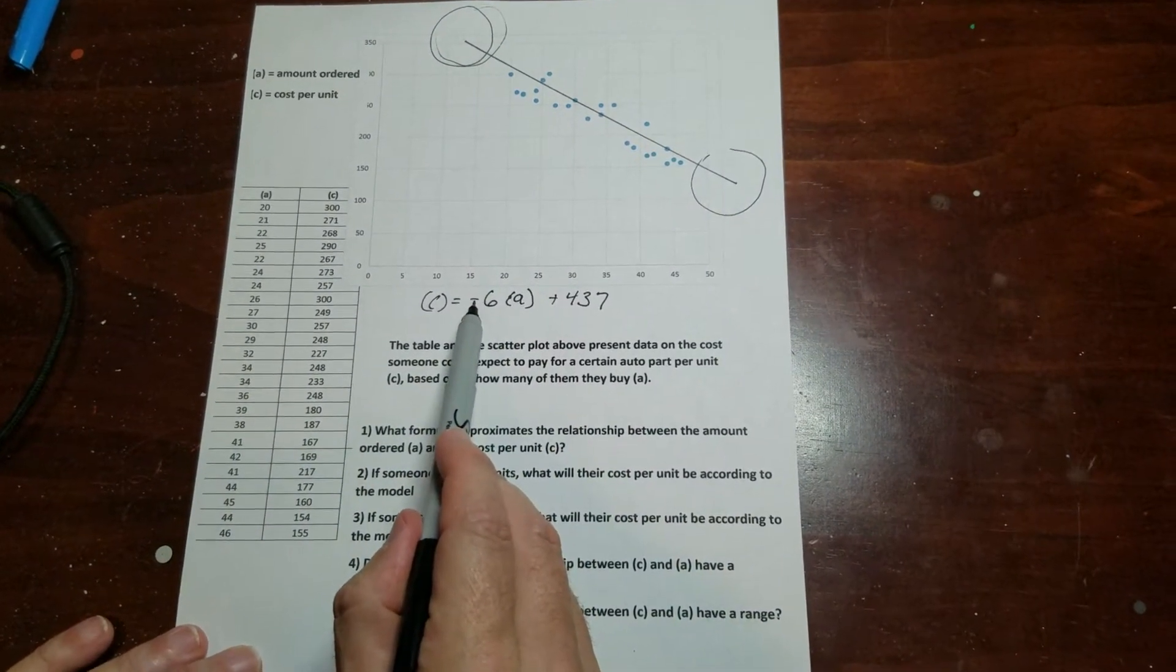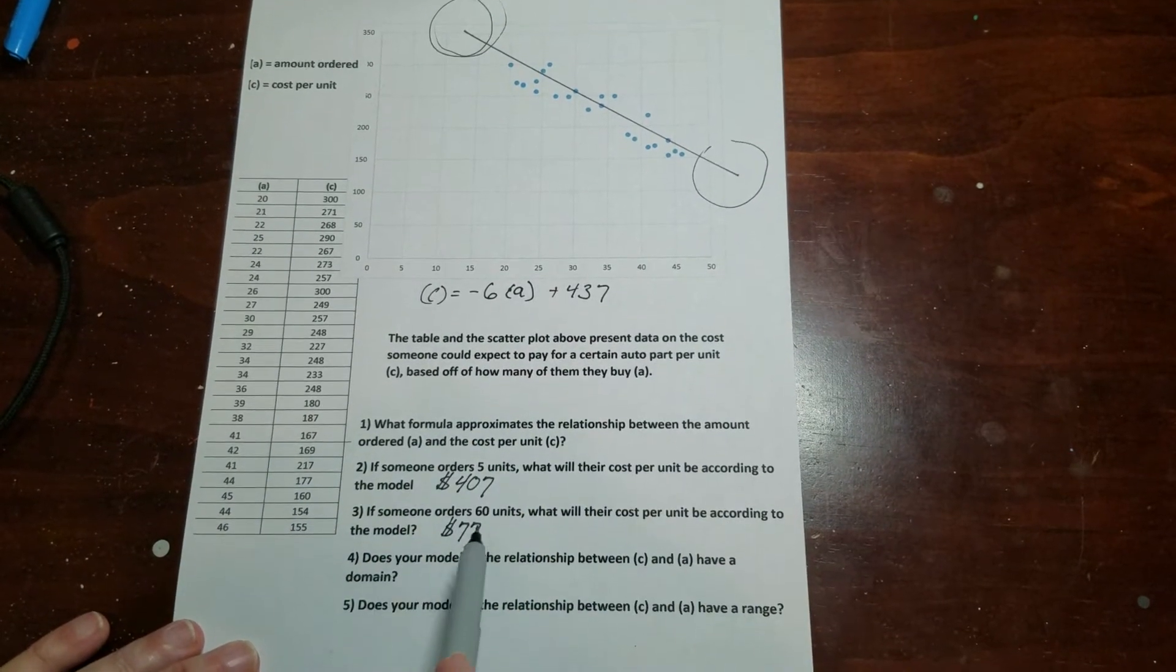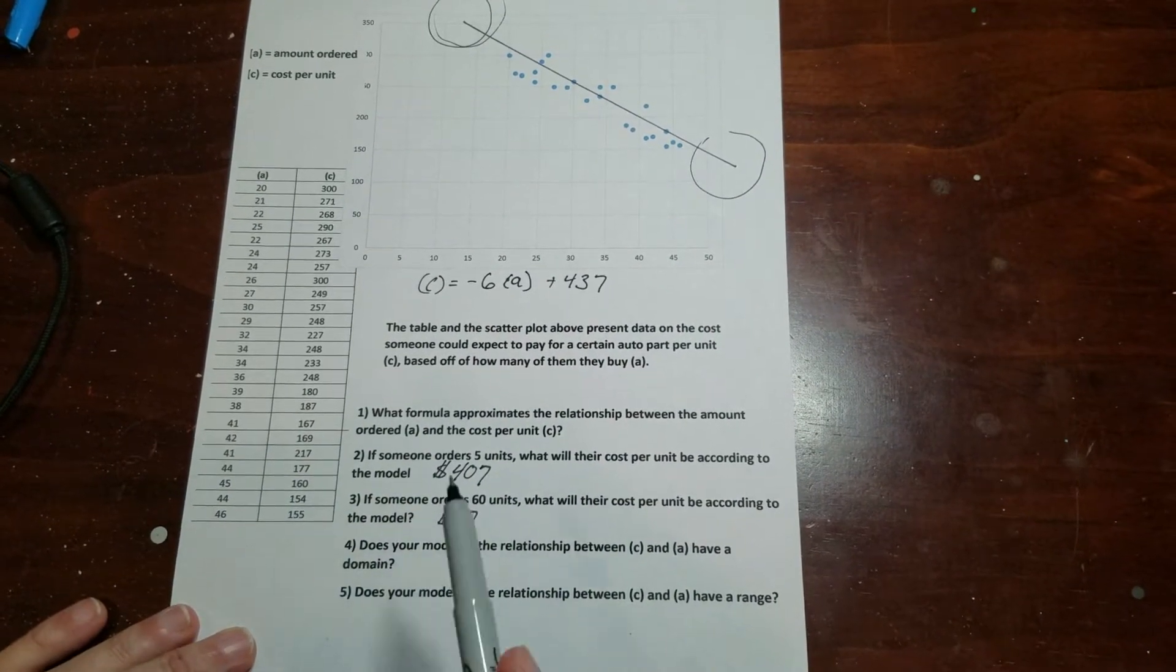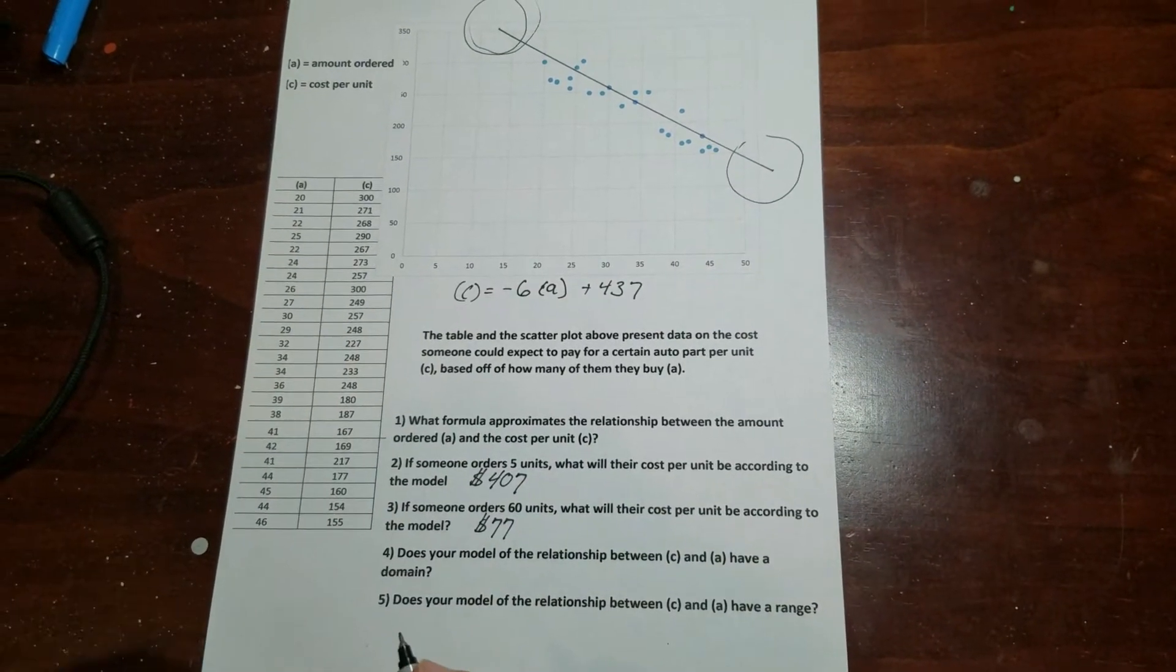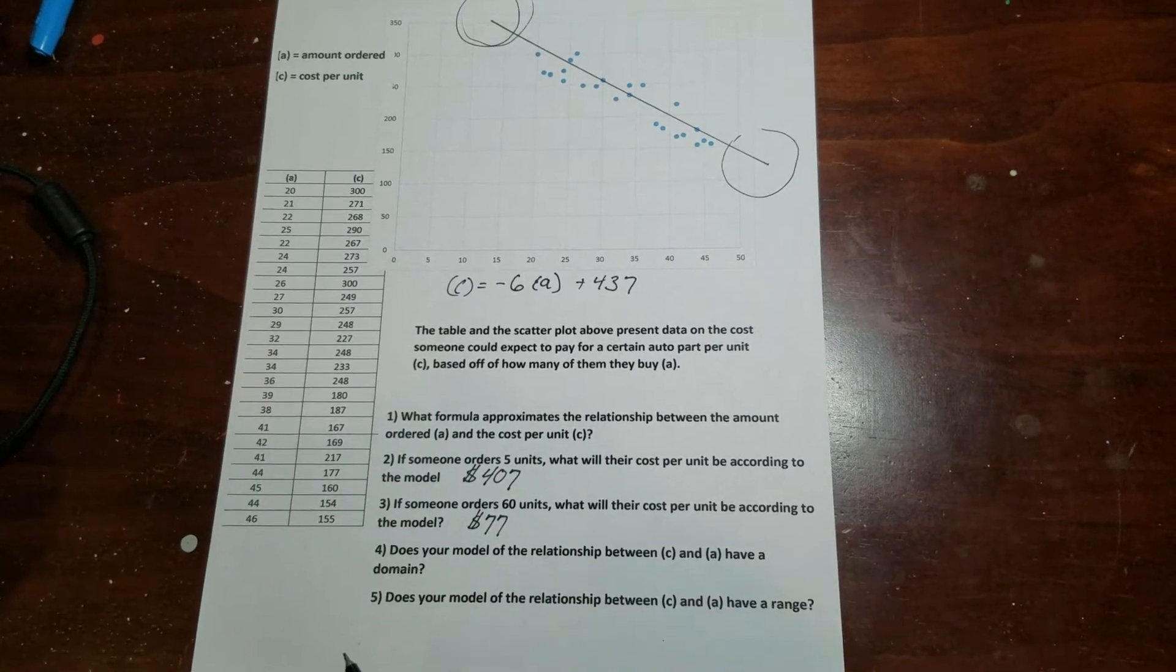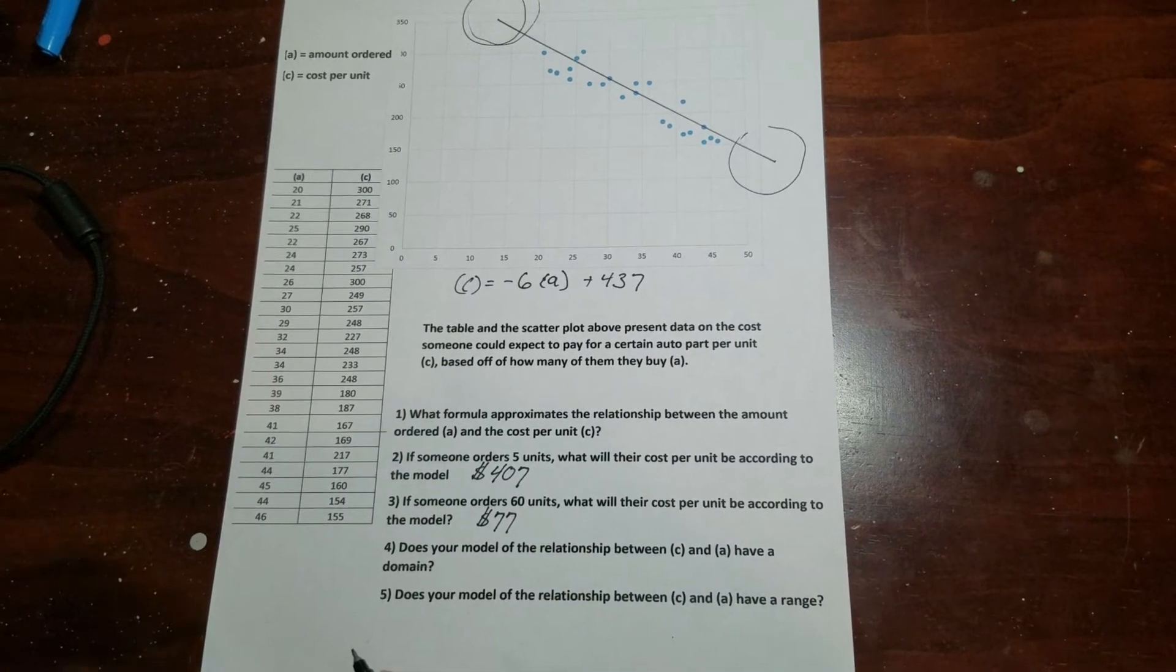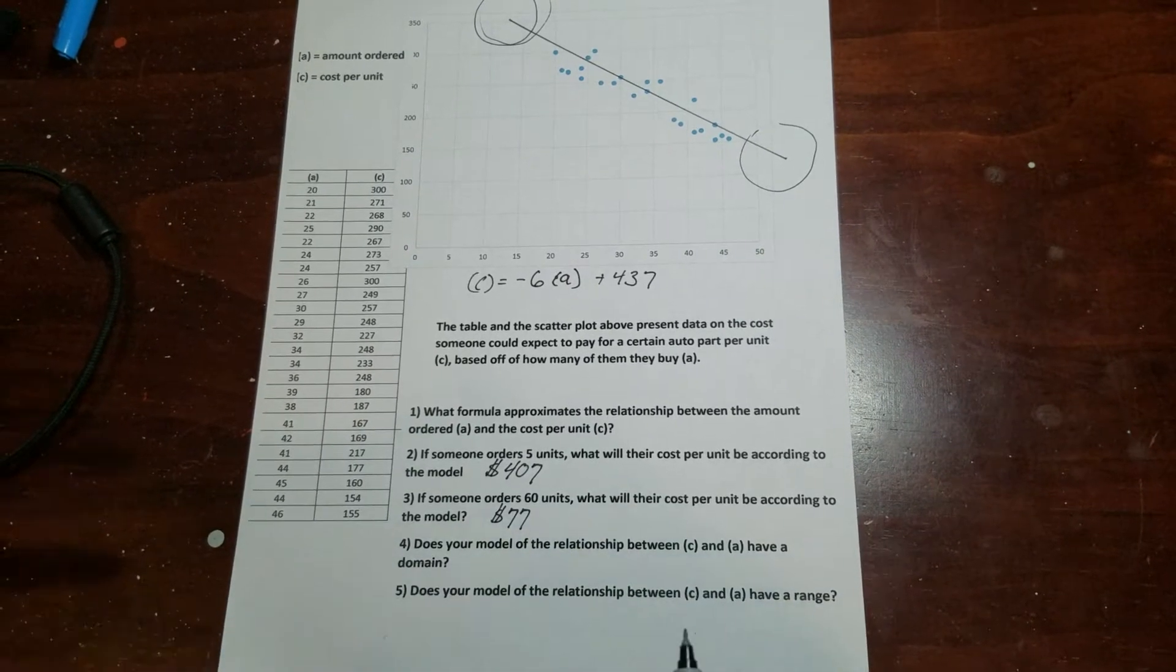we can see that the slope is negative 6. So we know if we keep going, at 60 it's already down to 77, but maybe I wanted to order 100 parts. It probably would come out being a negative number, which would mean that these people are actually paying me to take their parts. So this rule has to have some boundaries where it's true, and that's what we're going to talk about now.